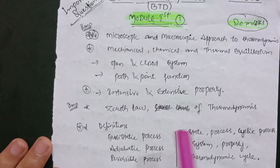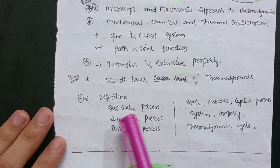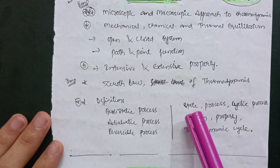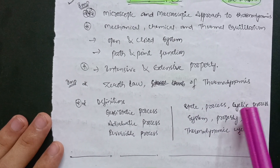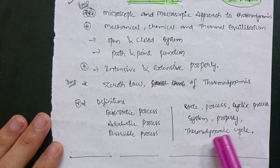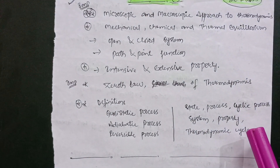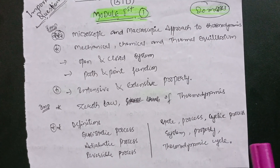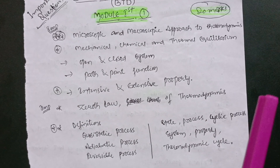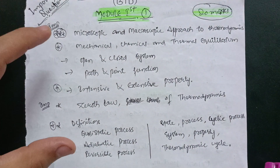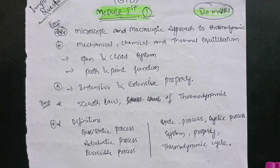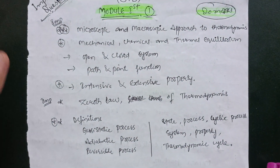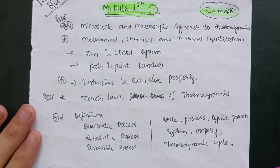Also cover path and point function, intensive and extensive properties, zeroth law of thermodynamics, and definitions like quasi-static process, adiabatic process, reversible process, cyclic process, system property, and thermodynamic cycle. Go through all these definitions and you can make 20 marks possible in the first module. Complete this first, then you can take those 20 marks.